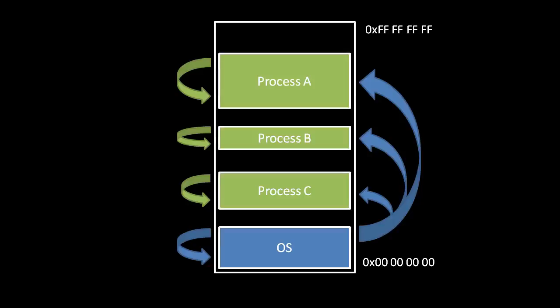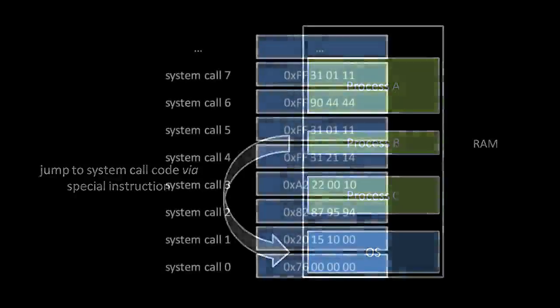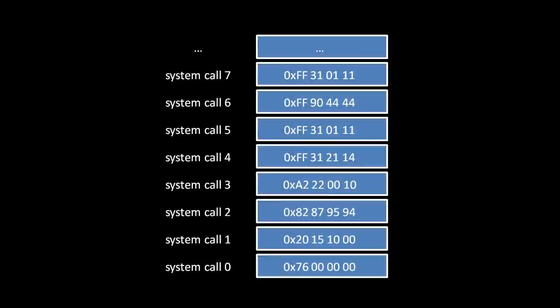These routines, called system calls, are the means by which processes initiate requests to the operating system — for things like reading and writing files, or sending and receiving data over the network. To invoke a system call, a process must use a specific CPU instruction, usually called syscall, in which the process specifies a system call number. The processor looks in the system call table for the address of the routine corresponding to that number and jumps execution to that address. Because the OS controls this table, a process can only jump execution to addresses of the OS's choosing.